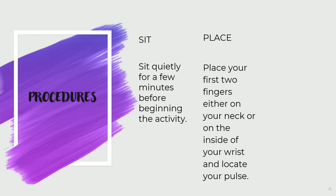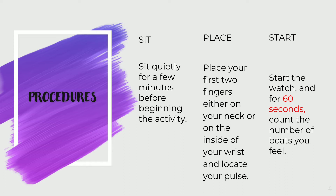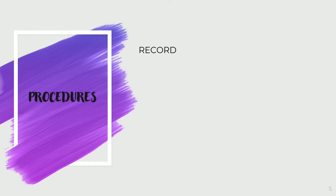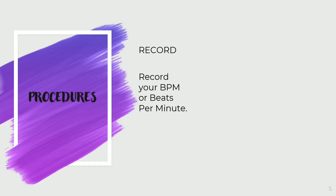Procedures for today's activity: sit quietly for a few minutes before beginning. Place your first two fingers either on your neck or on the inside of your wrist and locate your pulse. Then start the activity.